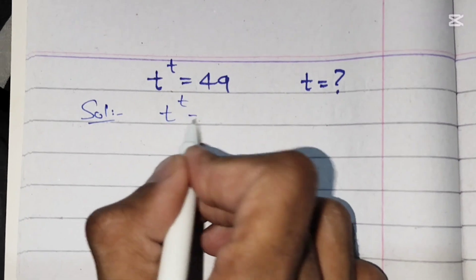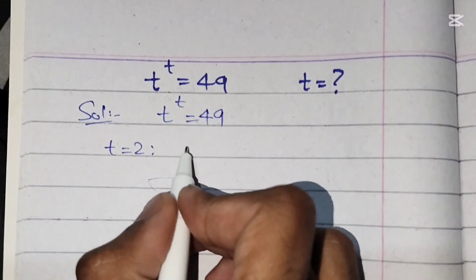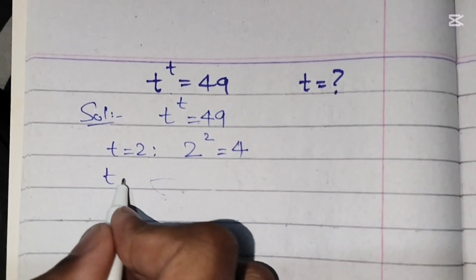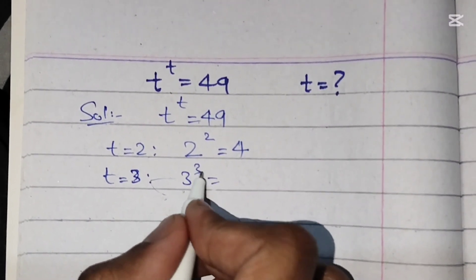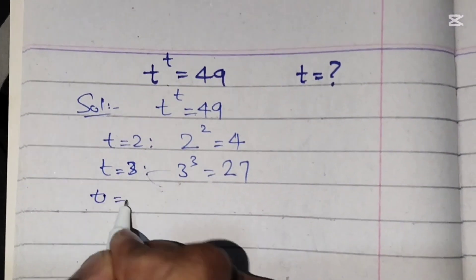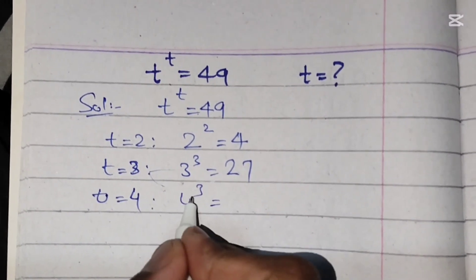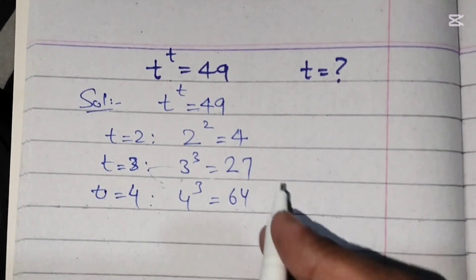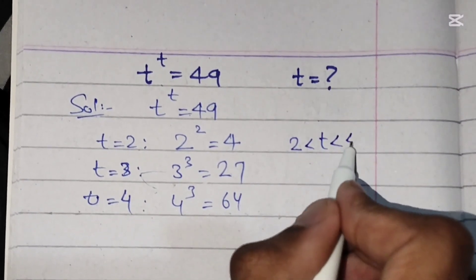Starting with t^t = 49, we try some values. If t = 2, then 2² = 4. If t = 3, then 3³ = 27. If t = 4, then 4⁴ = 256 — wait, 4³ = 64, but we need 49. So the value lies between 3 and 4.